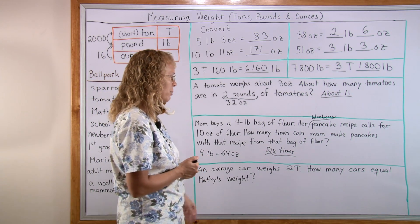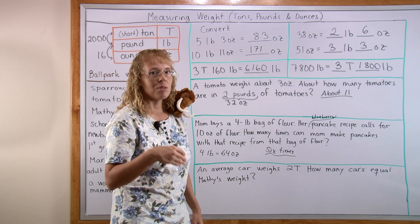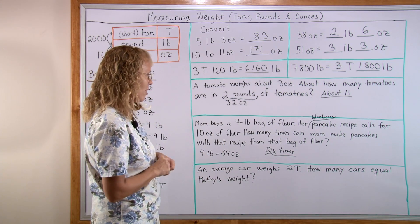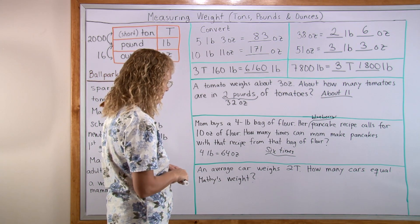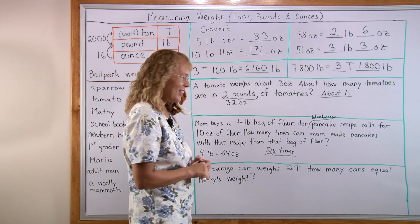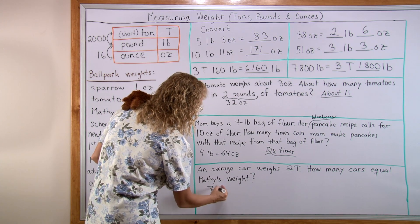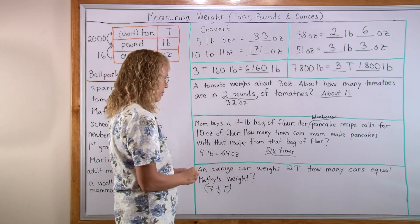Lastly, an average car weighs about 2 tons. This varies—some cars are lighter, some heavier—this is an average figure. How many cars equal Matthew's weight? Who wrote this problem? Matthew? Yeah, I bet. Let's think of Matthew's weight as what he told us earlier: 7.5 tons.